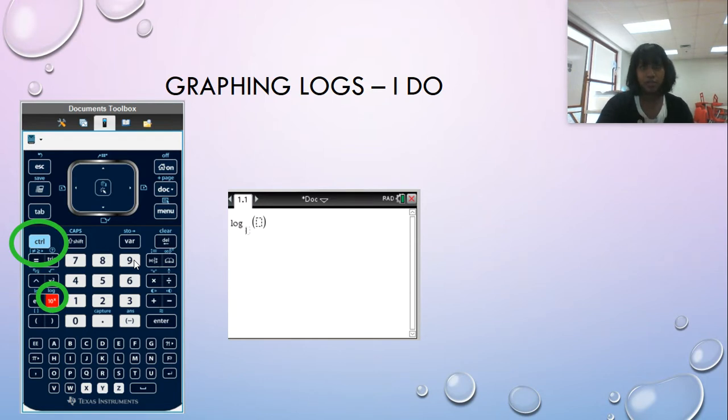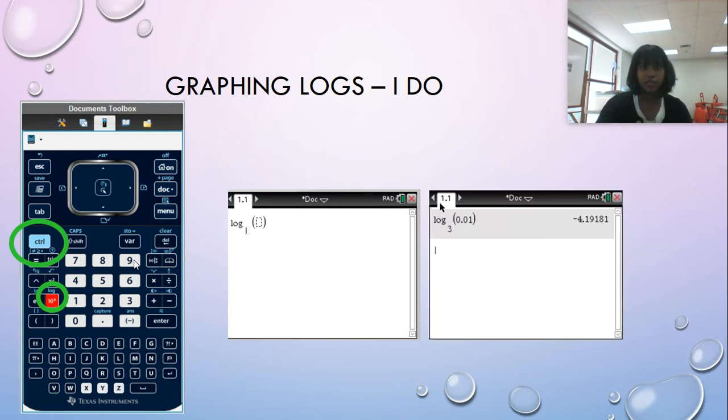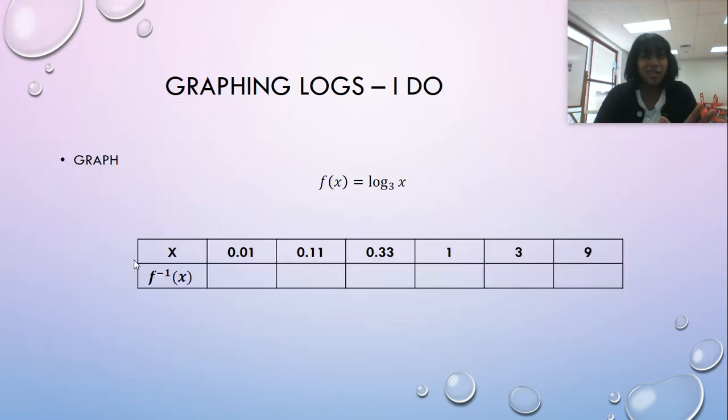If I don't put a base, it assumes base 10, but it gives you an opportunity to put bases in. So that's really nice that the TI Inspire is smart enough to do that for us. So I put log base three of 0.01, and that's just going to give me a point to plot. But because I have a graphing calculator, instead of filling all of that out, I would do it in the graphing calculator.